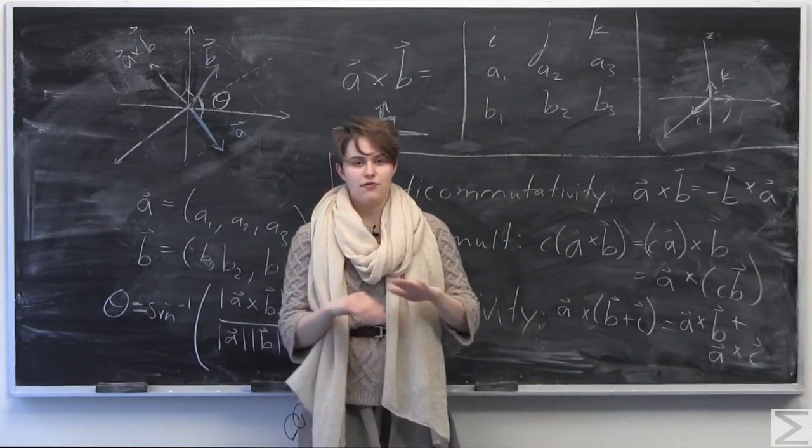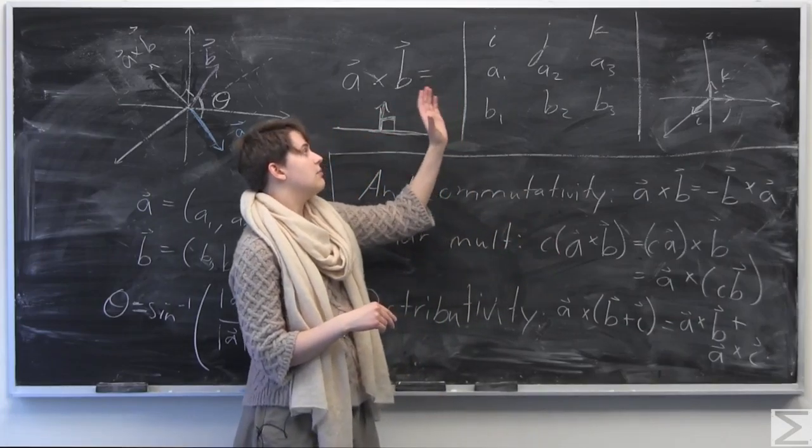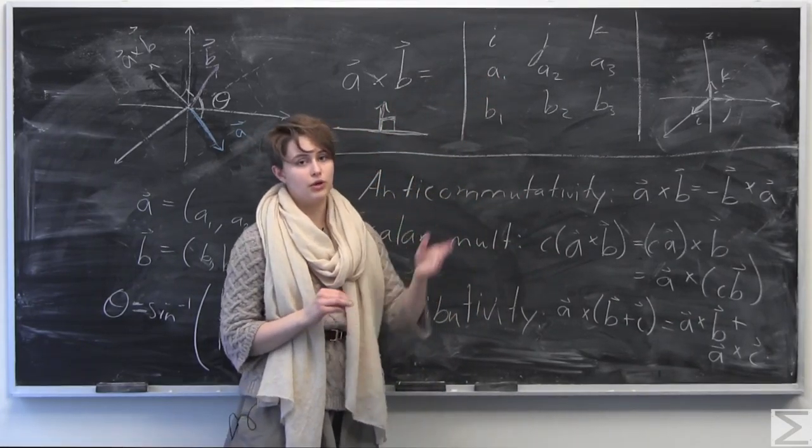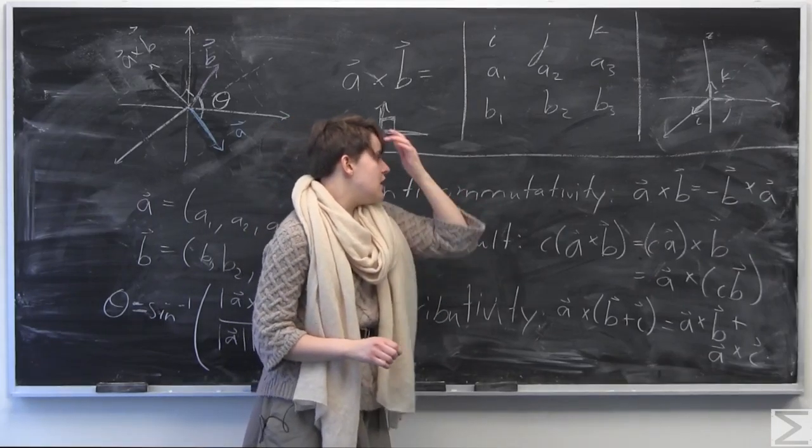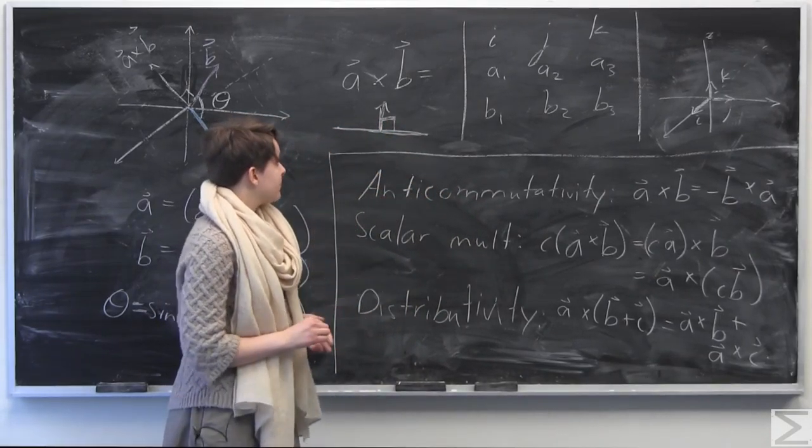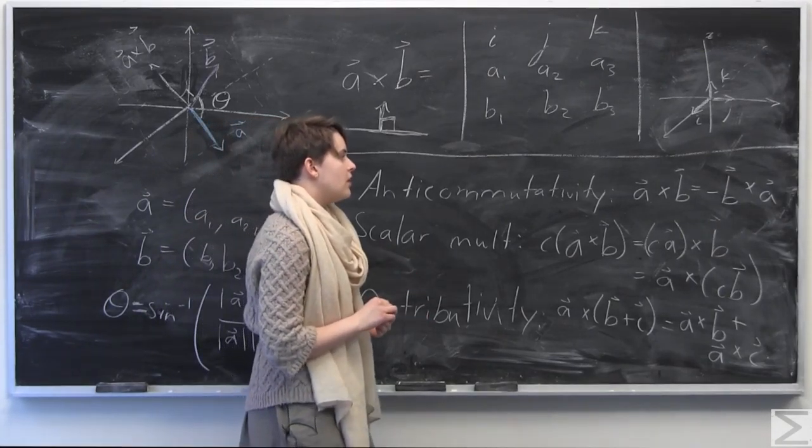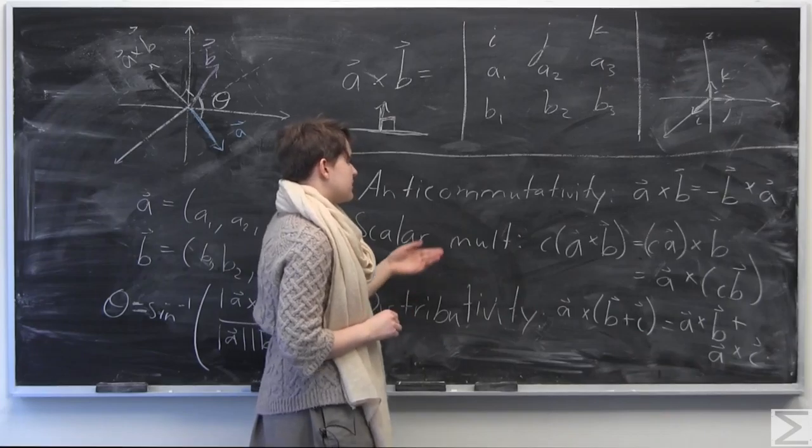So I would always memorize this matrix instead of memorizing, because you could memorize, okay, a2 times b3 times i times this times that. It's much easier to just memorize the matrix and eliminates any confusion along the way, as you can very much so visually see what you're doing when you're taking the cross product when you set up the matrix like that.